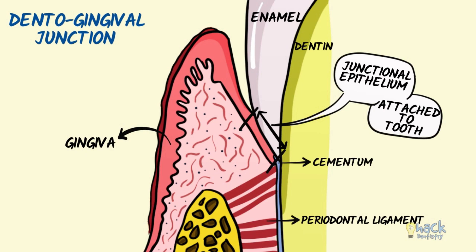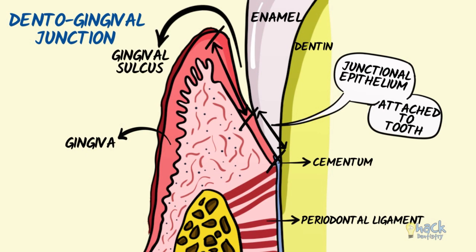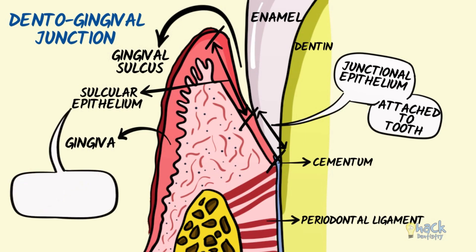Above the junctional epithelium is the gingival sulcus, which is surrounded by a sulcular epithelium. However, unlike the gingival epithelium, the sulcular epithelium is non-keratinized and lacks rete pegs.